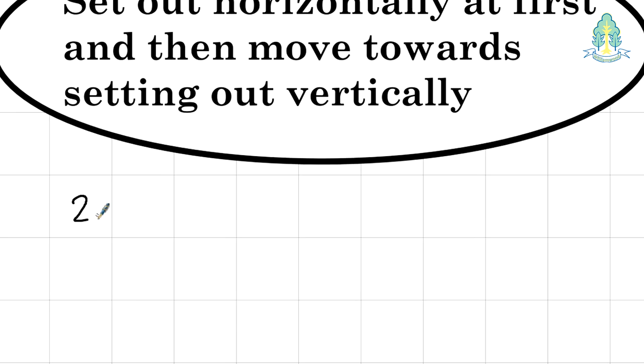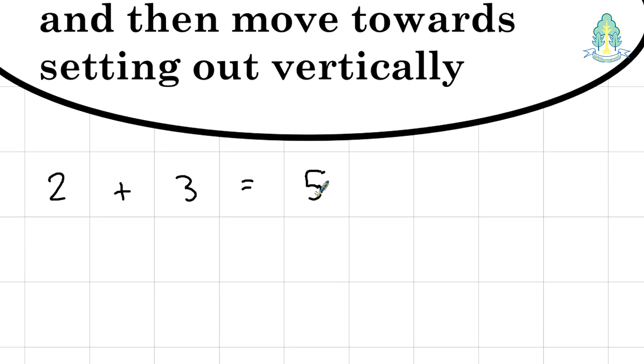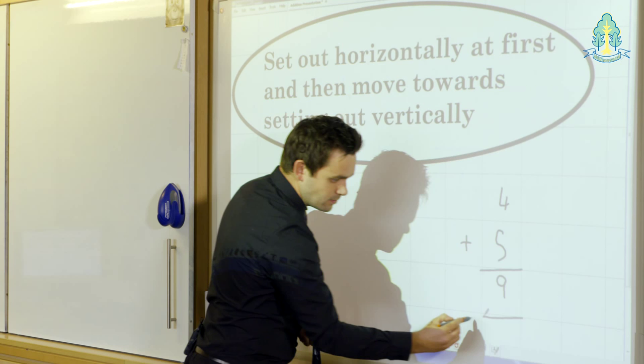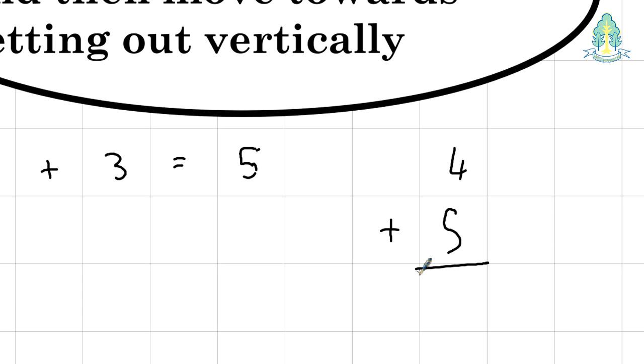For example, an initial piece of working may be two plus three is equal to five, working horizontally, and then start to work vertically once they're more confident. For example, four plus five is equal to nine, working vertically downwards.